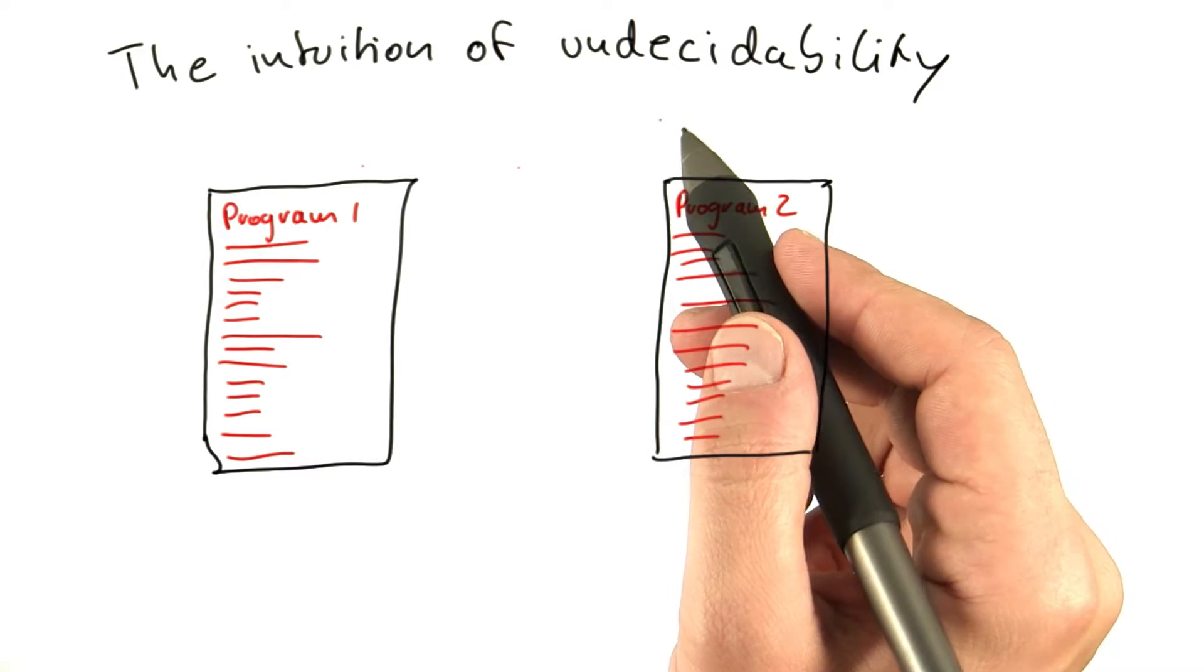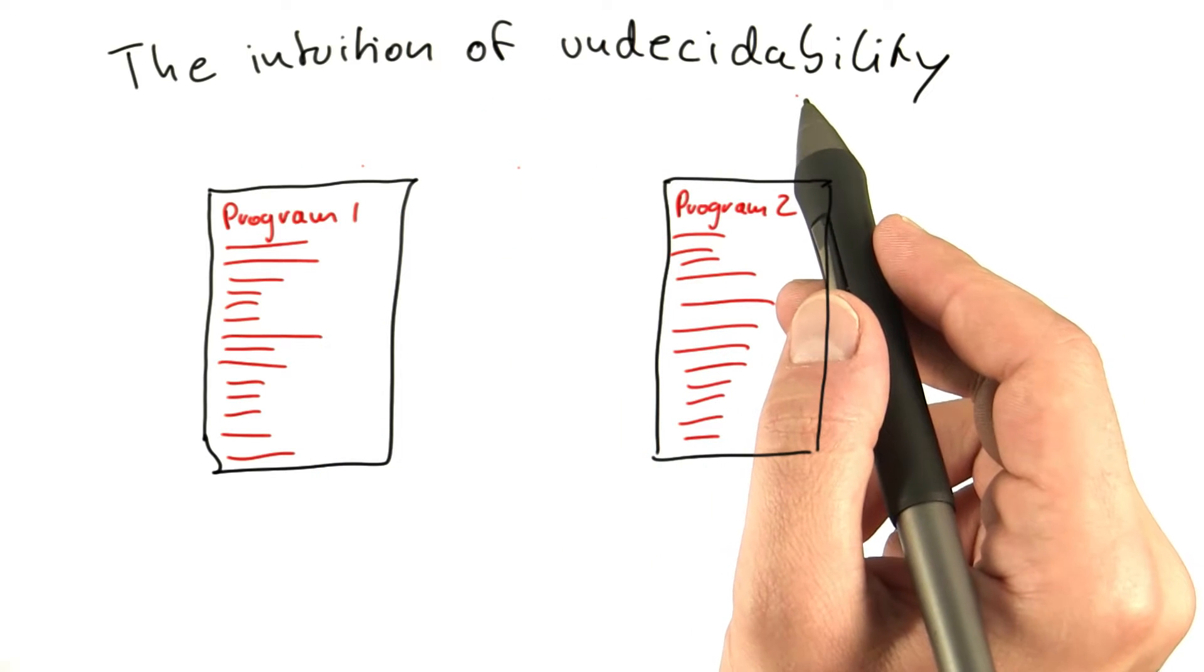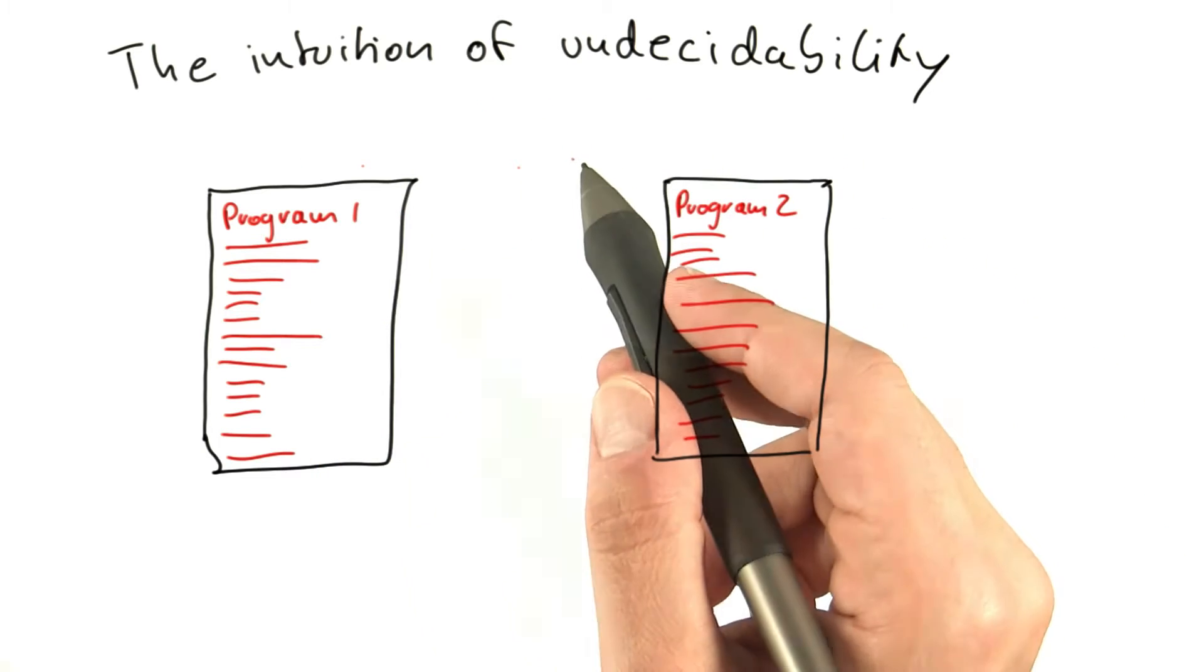It's important, I think, to realize what is being implied by undecidability and what is not being implied.